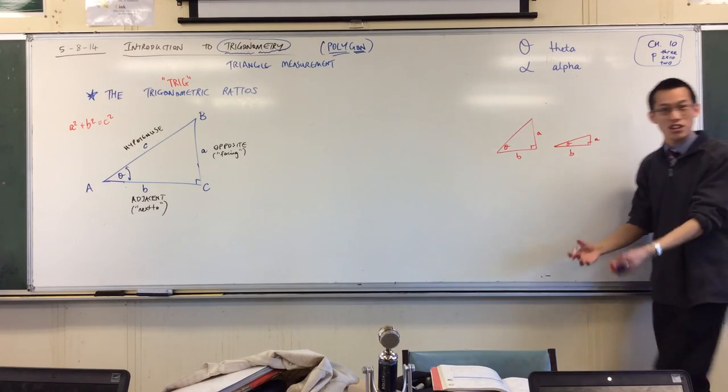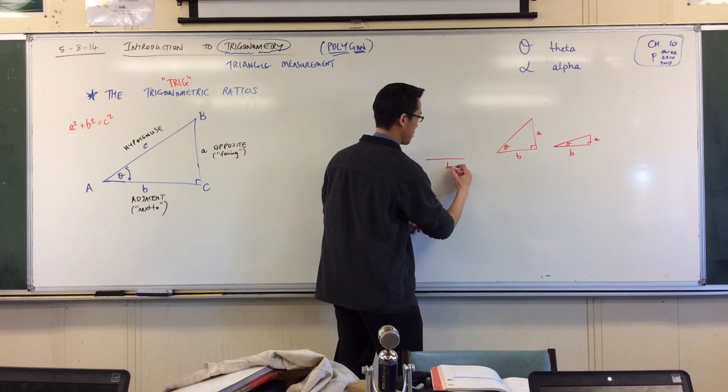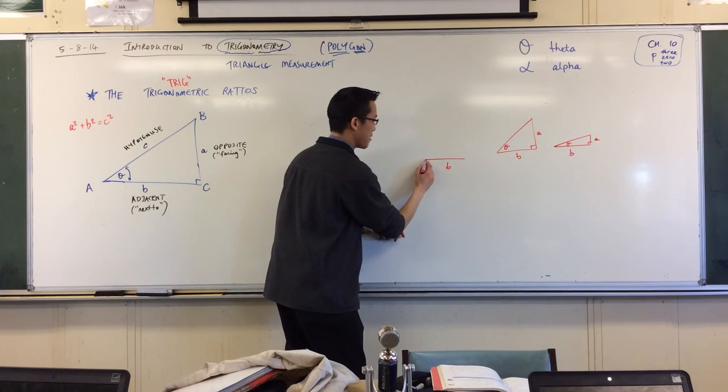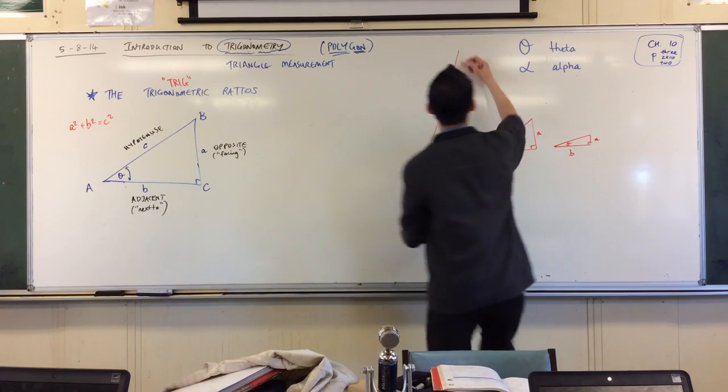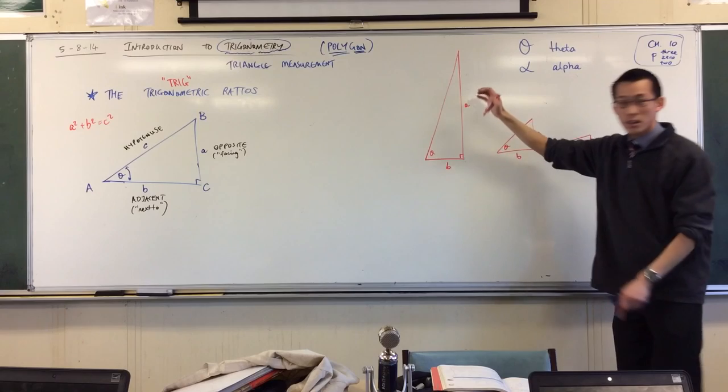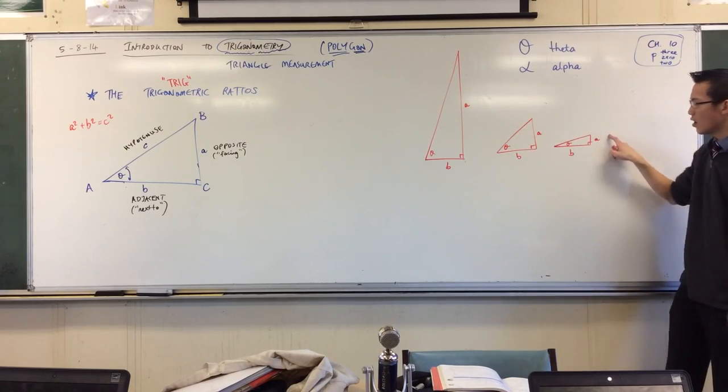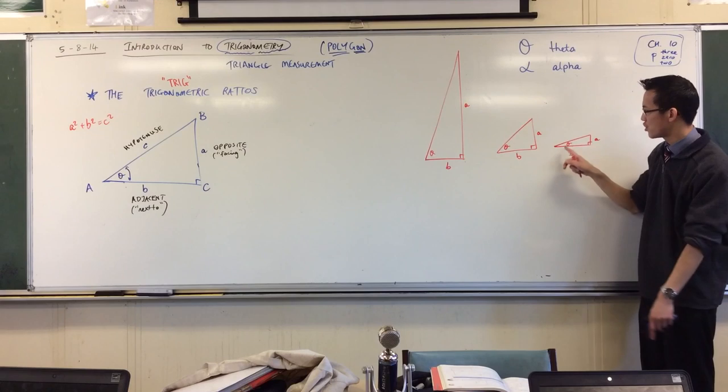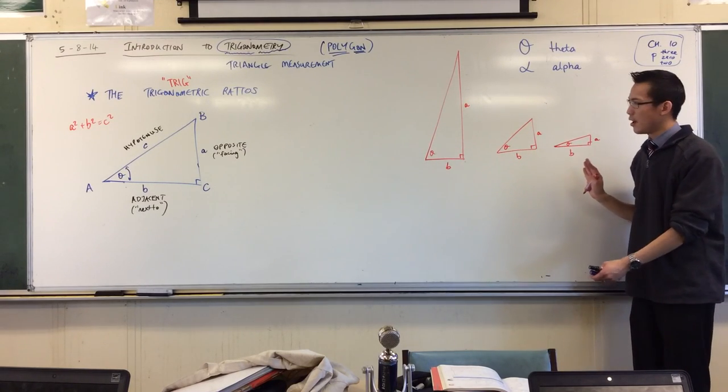And in the same way if I went the other direction, if I made theta enormous. Here's my same b and then I made theta really tall like this, see that's a bigger angle. A will now be, sorry a rather, a has gotten really enormous. So you can see a always kind of has this relationship with the angle. In fact both of the sides have this relationship.